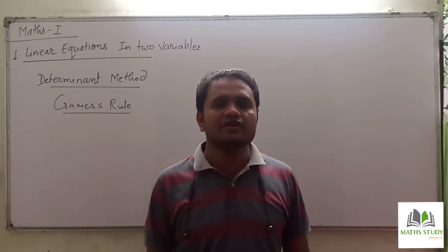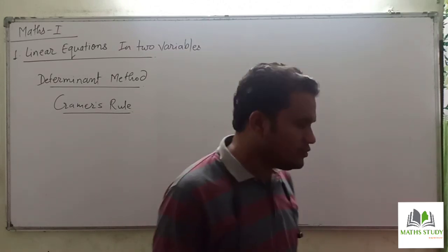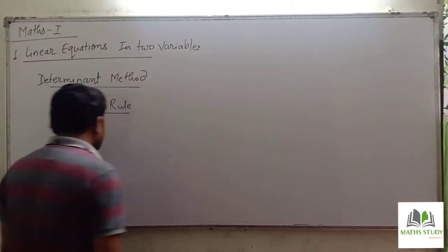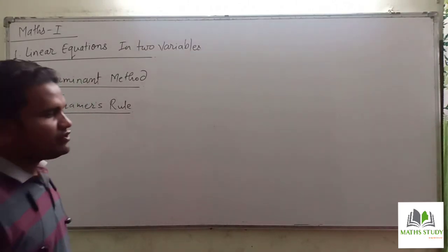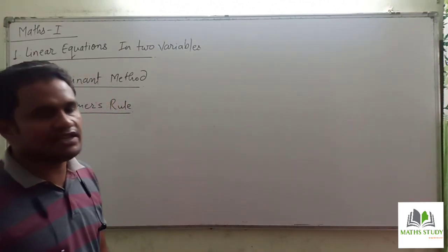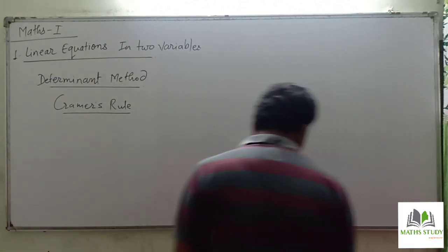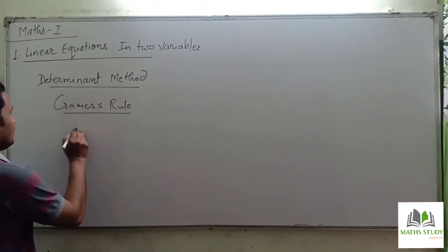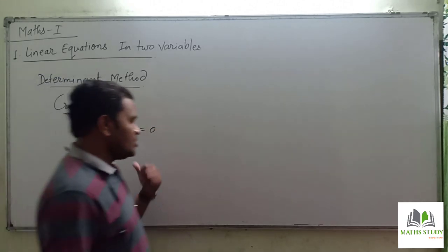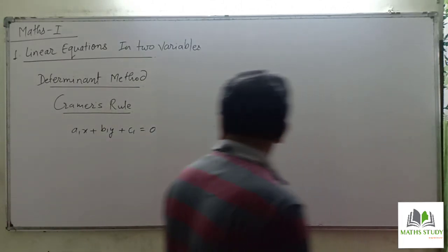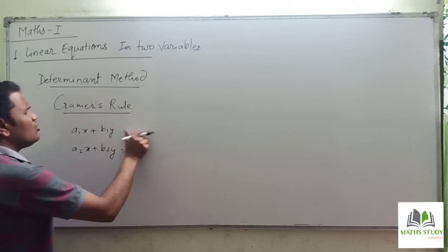Now we will see how to apply the determinant method to solve simultaneous equations using Cramer's Rule. Whenever we solve such questions, we are given two linear equations in two variables. Since we solve them at the same time, they are called simultaneous linear equations. For example, A1x + B1y = C1 and A2x + B2y = C2.